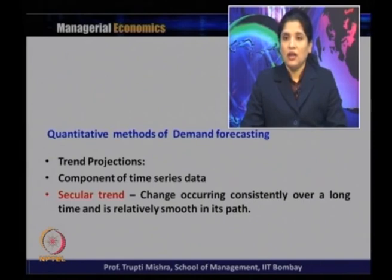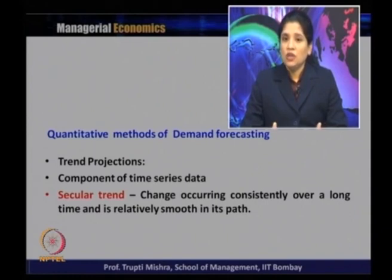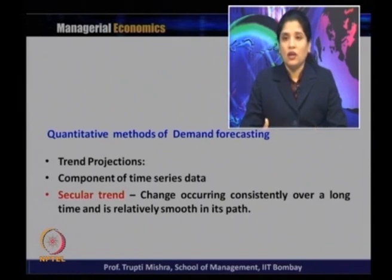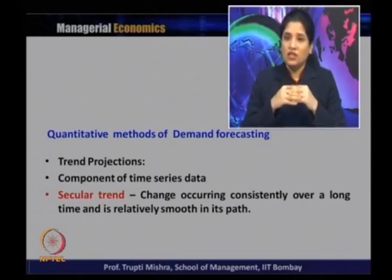In trend projection, looking at the past data and whatever trends are present, the projection is done on the basis of the past trend. The basis for this trend projection is the time series data, because time series data gives the trend as it is in chronological order. We get the full set of data, which reveals the behavior of that variable in the past time period. After getting the past sales data, the projection is done for the future time period.